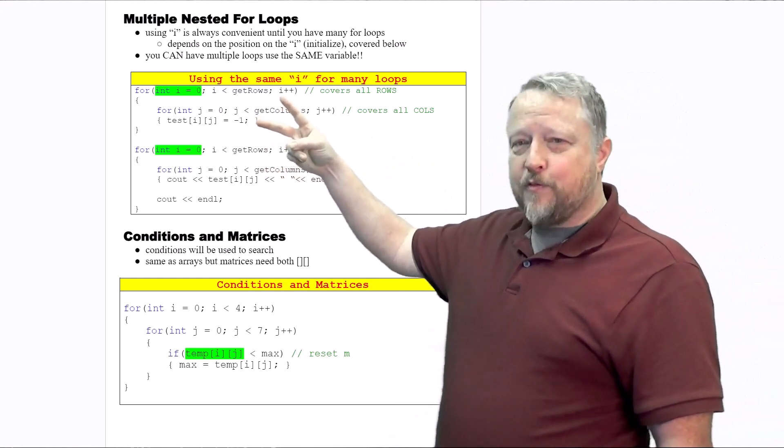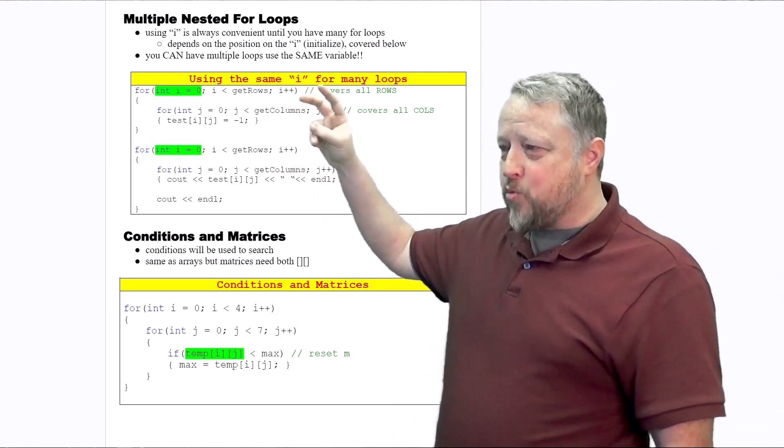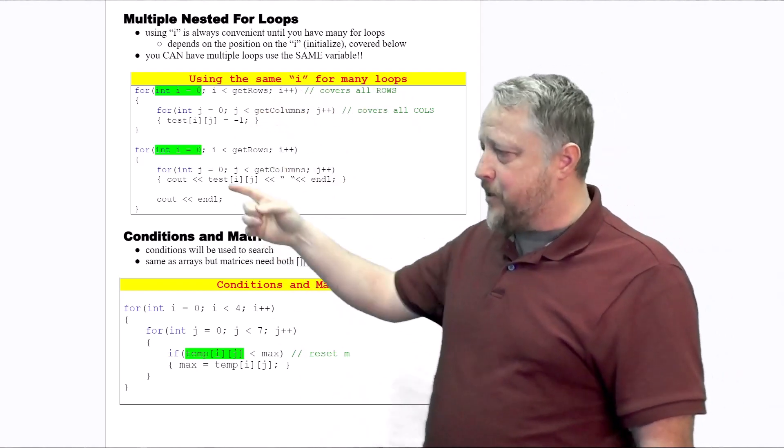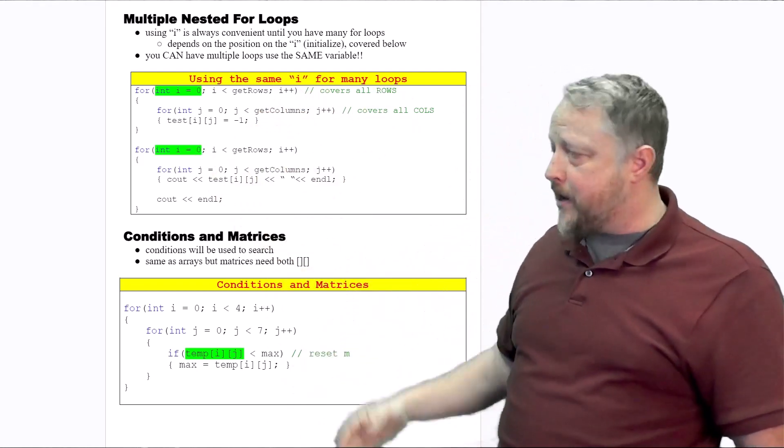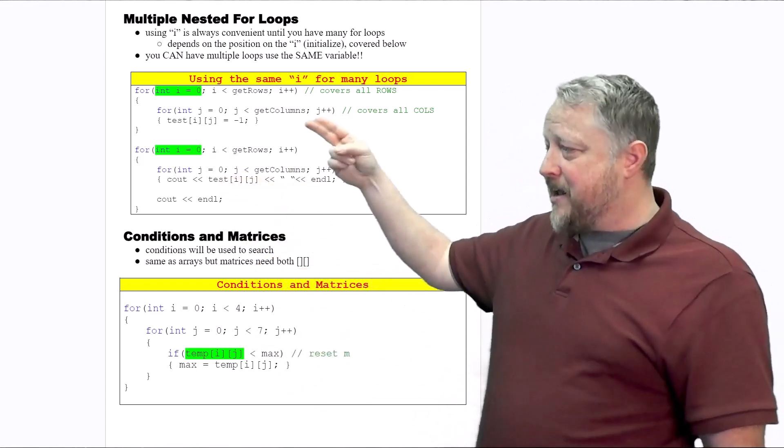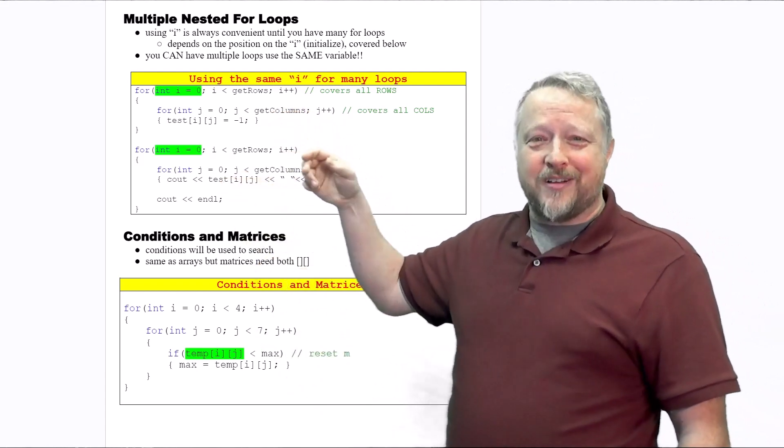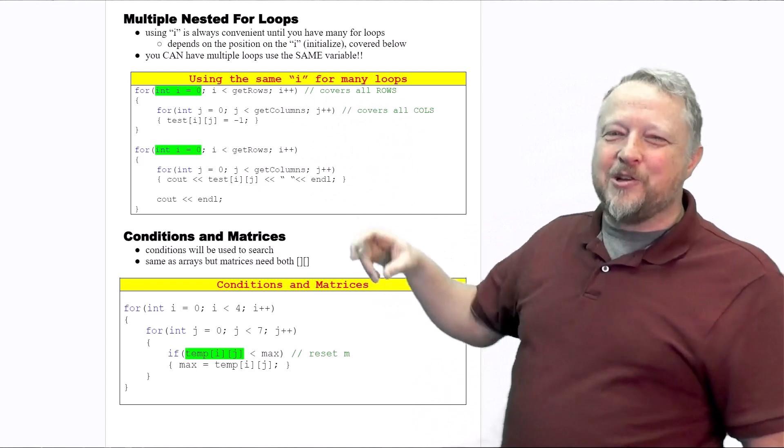Remember, once a for loop lives, works, and dies, I can reuse that same variable over again. That's the exact same feature that we use with J. J will get used quite often within the same I loop that we had.